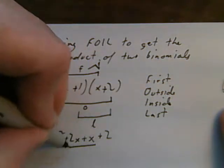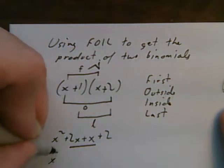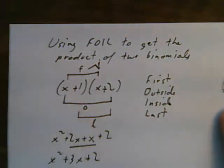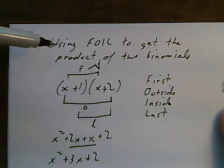Collect my like terms. That is the expanded version of (x + 1)(x + 2) using FOIL.